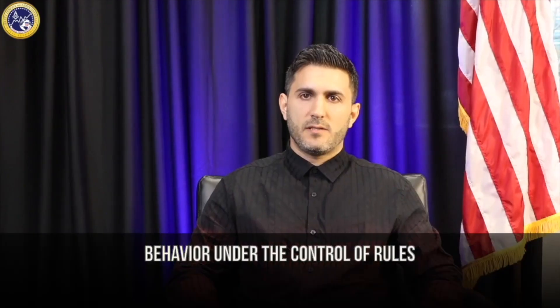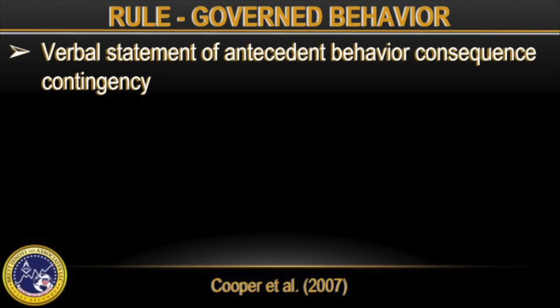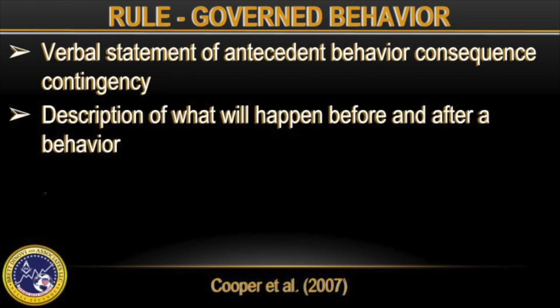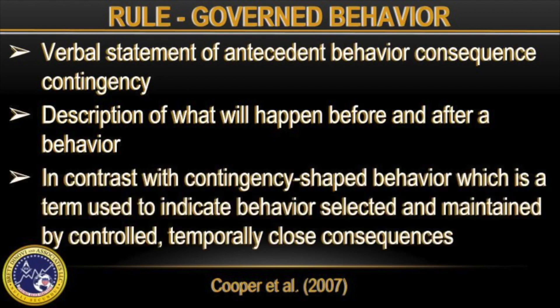What is Rule-Governed Behavior? Simply, it is behavior under control of rules. In behavior analytic terms, the rule is seen as a verbal statement of antecedent behavior, consequence, and contingency — basically a description of what will happen before and after a person engages in a behavior, rather than a person experiencing the behavior themselves, which is shaped by reinforcing or aversive consequences, known as contingency-shaped behavior.